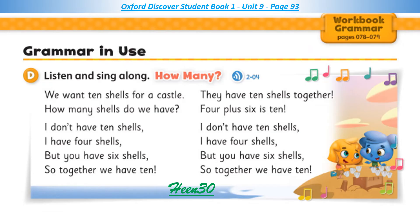Page 93. Grammar in use. D. Listen and sing along: How many? We want 10 shells for a castle. So how many shells do we have? I don't have 10 shells. I have 4 shells. But you have 6 shells. So together we have 10 shells. They have 10 shells together. 4 plus 6 is 10.